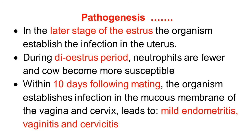During estrus, because of the large number of neutrophils in the uterus, establishment of infection is not possible. But in the later stage of the cycle, especially during the diestrus period, when neutrophils are fewer in the uterus, the organism is able to establish infection. So most infections are established during the diestrus period.